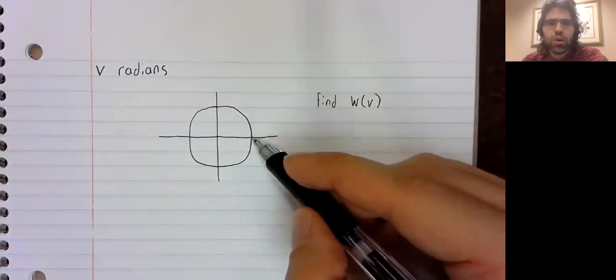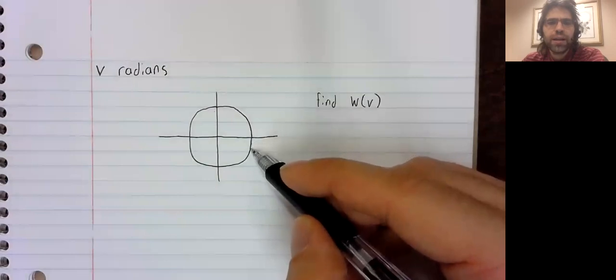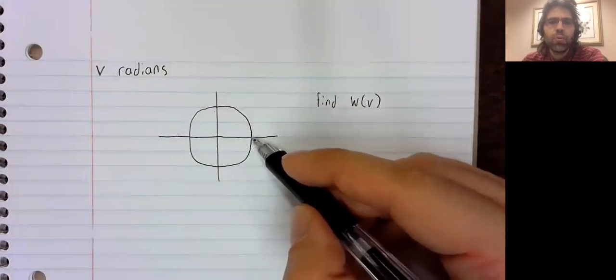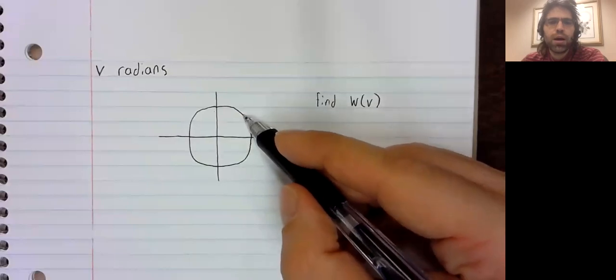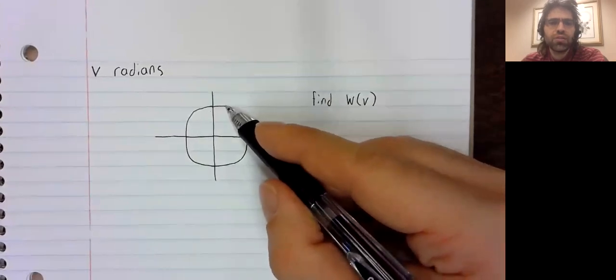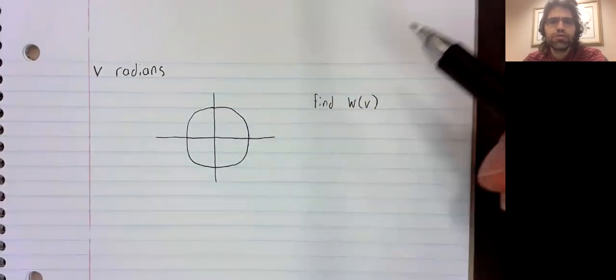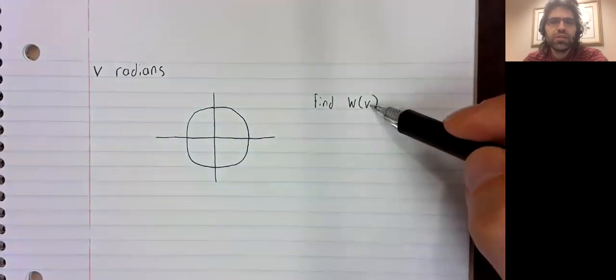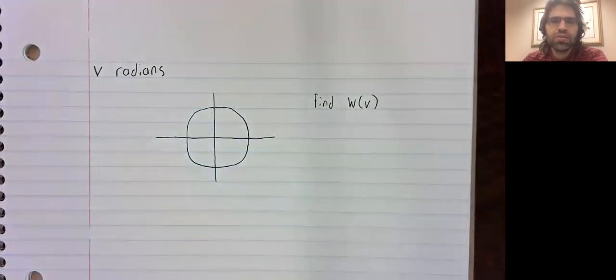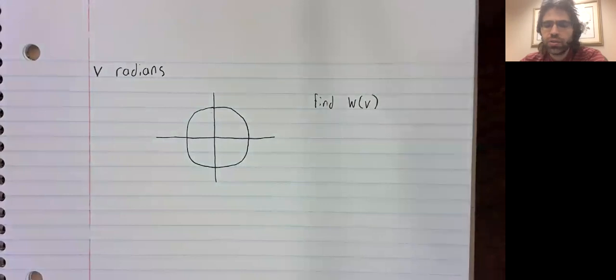So we start here and going either clockwise if V is negative or counterclockwise if V is positive, we travel V units and wind up somewhere on the unit circle.